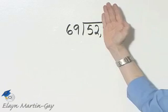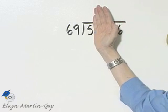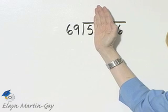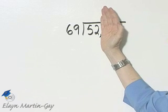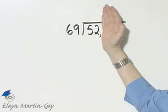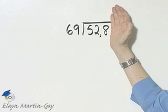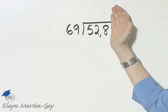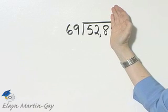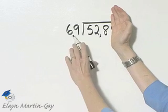Let's divide and let's just start moving across the dividend. Can I divide 69 into 5? No. What about 69 into 52? No. So we'll work with 69 into 528.